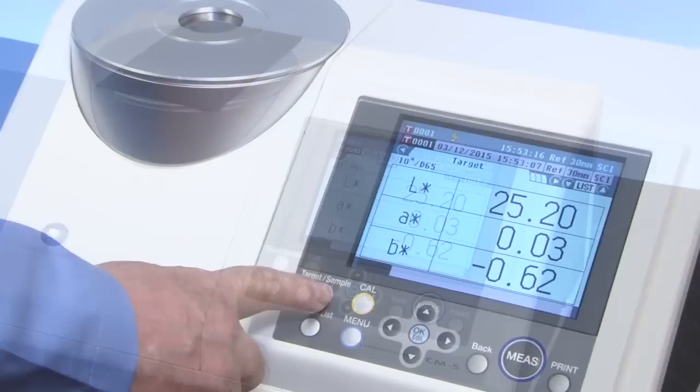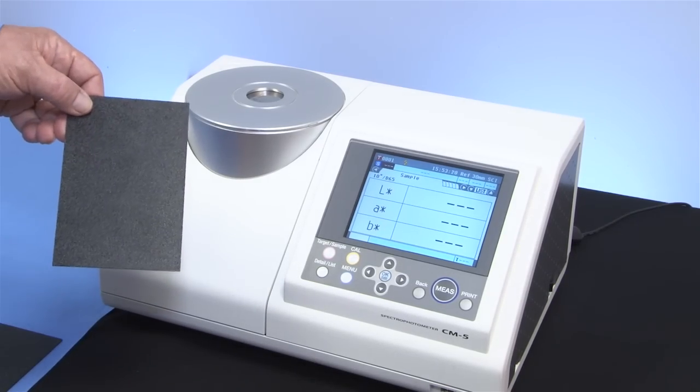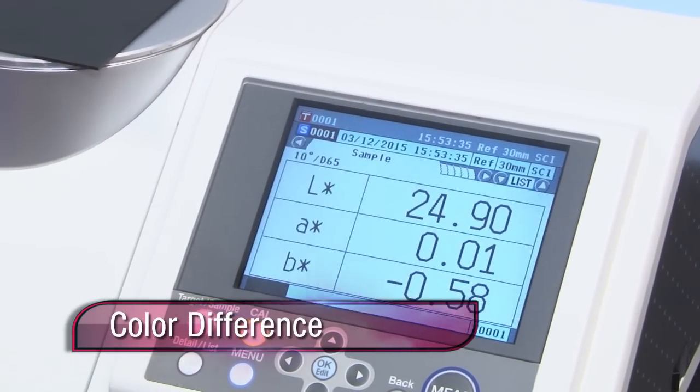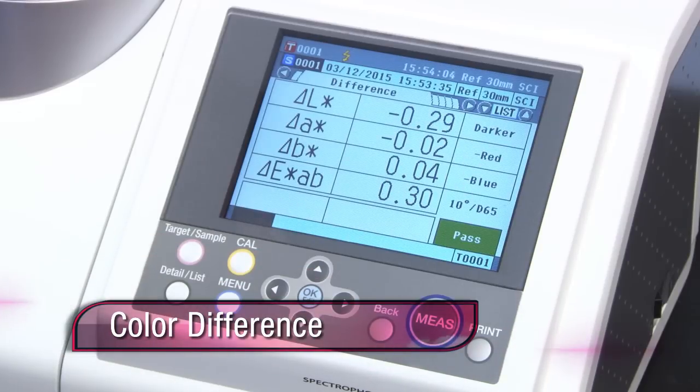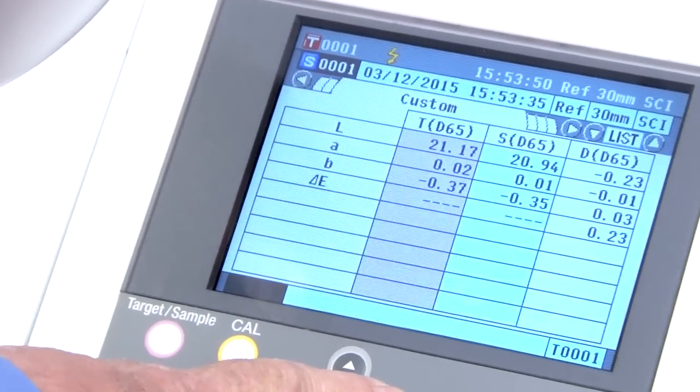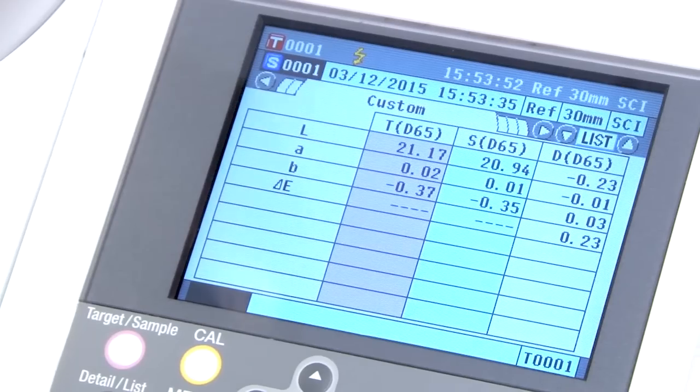For color difference, measure the sample color and the standard color, then save the values for each measurement. The differences between the sample and standard are calculated using the resulting colorimetric values. Differences are shown numerically to identify color inconsistencies between products.